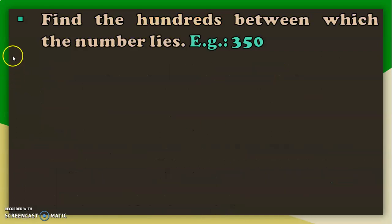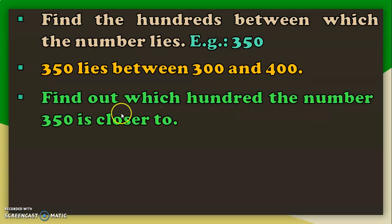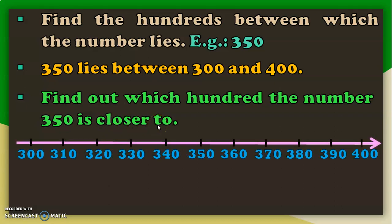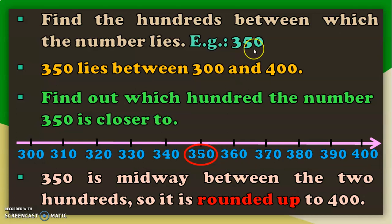Let us take another example. The number is 350, which lies between the hundreds 300 and 400. Using a number line, we can see that 350 is at the midway between 300 and 400. As per the rule, when a number is at the midway or above, you round it up to the higher limit. So, 350 rounded to the nearest 100 is 400.